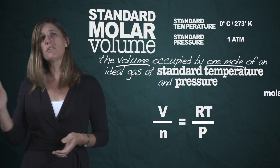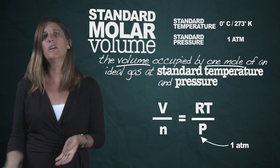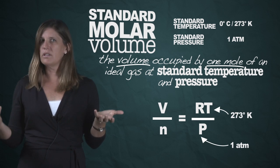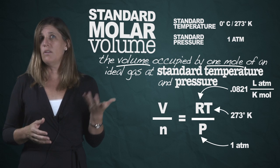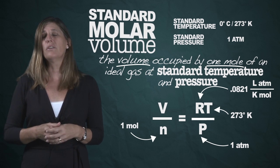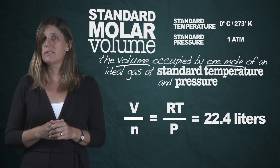So for P, we plug in one atmosphere. For T, 273 Kelvin. R, of course, is the gas constant. And then N, one mole. Solve, and you'll get 22.4 liters.